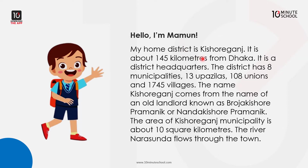The name Kishorgonj comes from the name of an old landlord known as Brajo Kishor Pramanik, or Nandokishor Pramanik. The area of Kishorgonj Municipality is about 10 square kilometers. The river Norosunda flows through the town.